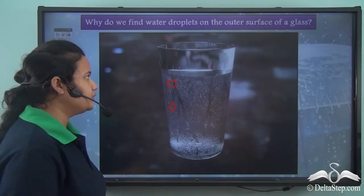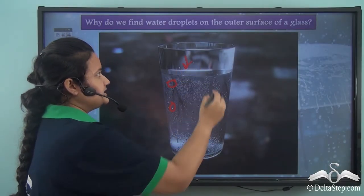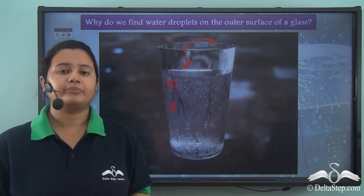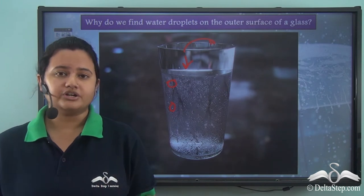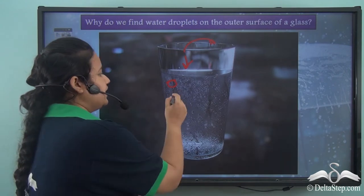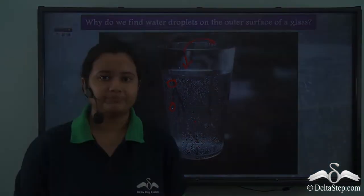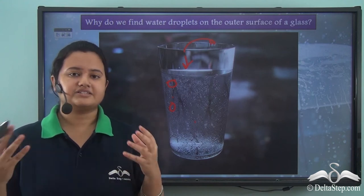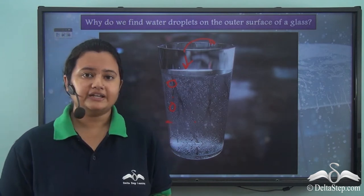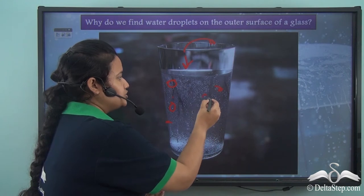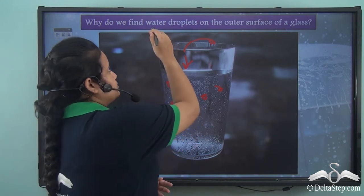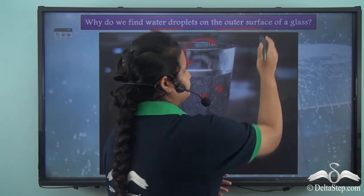What just happened? Did the water present inside the glass come out? Well, the answer is no. It is not the water present inside the glass, but the water present in the form of water vapour in our surroundings that has stuck to the outer surface of the glass. These water vapours come in contact with the cold surface and transform into tiny water drops, which we can notice on the outer surface of the glass.